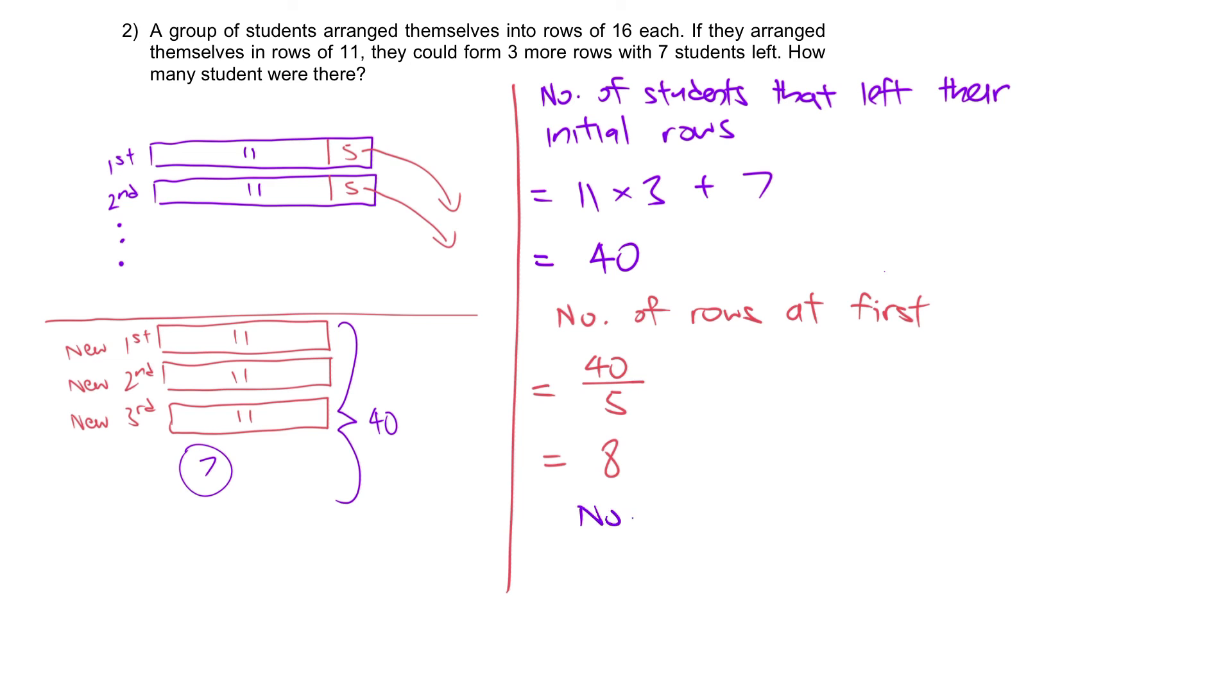Number of students there were. Well, initially one row, there are 16. So eight of it, eight rows, will be eight times 16. That'll be 80 plus 48, 128 students.